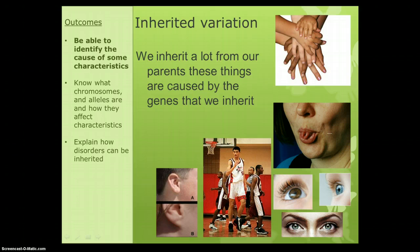Let's have a look at inherited variation first. You can inherit lots of things from your parents, and it's your genes that decide what it is that you inherit. Some examples are your skin colour, whether or not you can roll your tongue, eye colour, your race, height is a little bit influenced by your genes, and whether your ear lobes are attached to the side of your head or free to hang. Those are all inherited things.